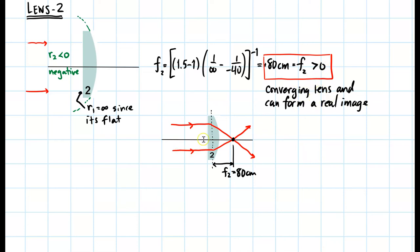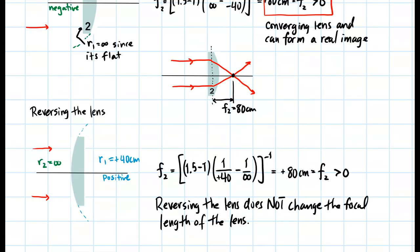Light from the left will converge to the focal point when rays are parallel. However, what happens if we turn the lens around? If we reverse or flip the lens, the first surface now has its radius landing on the positive side, and the second surface has its radius at infinity. Plugging this into the lens maker equation still gives 80 centimeters for the focal length. Reversing the lens does not change its focal length.